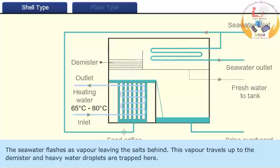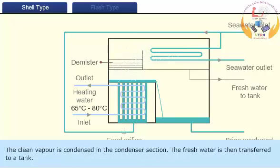This vapor travels up to the demister and heavy water droplets are trapped there. The clean vapor is condensed in the condenser section. The fresh water is then transferred to a tank.